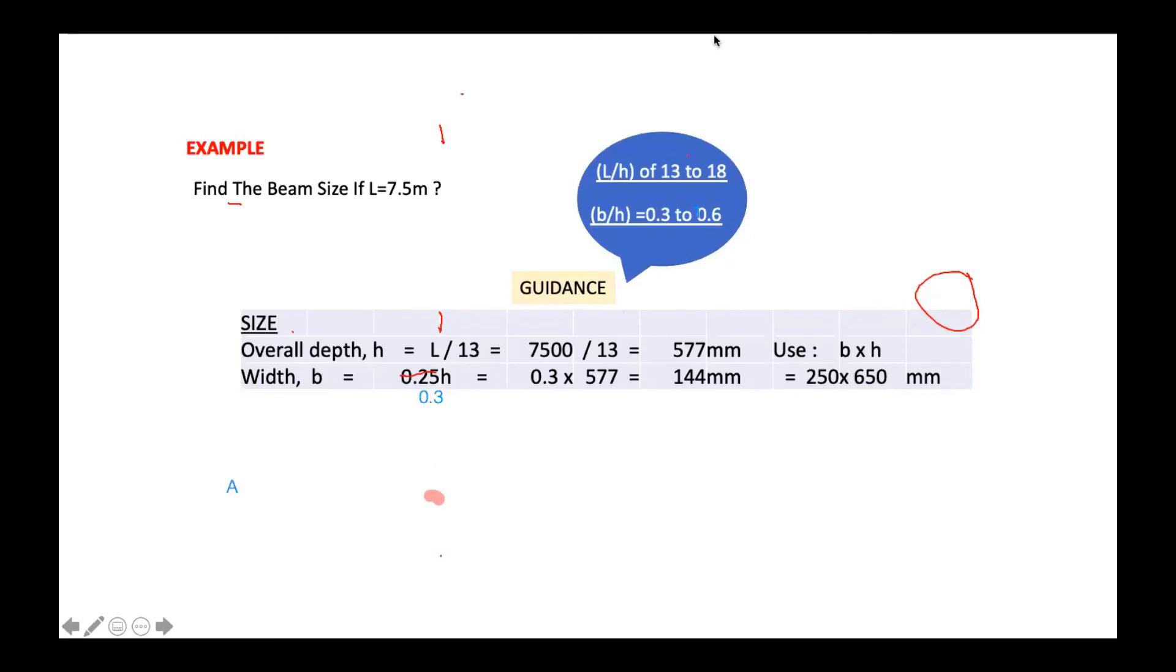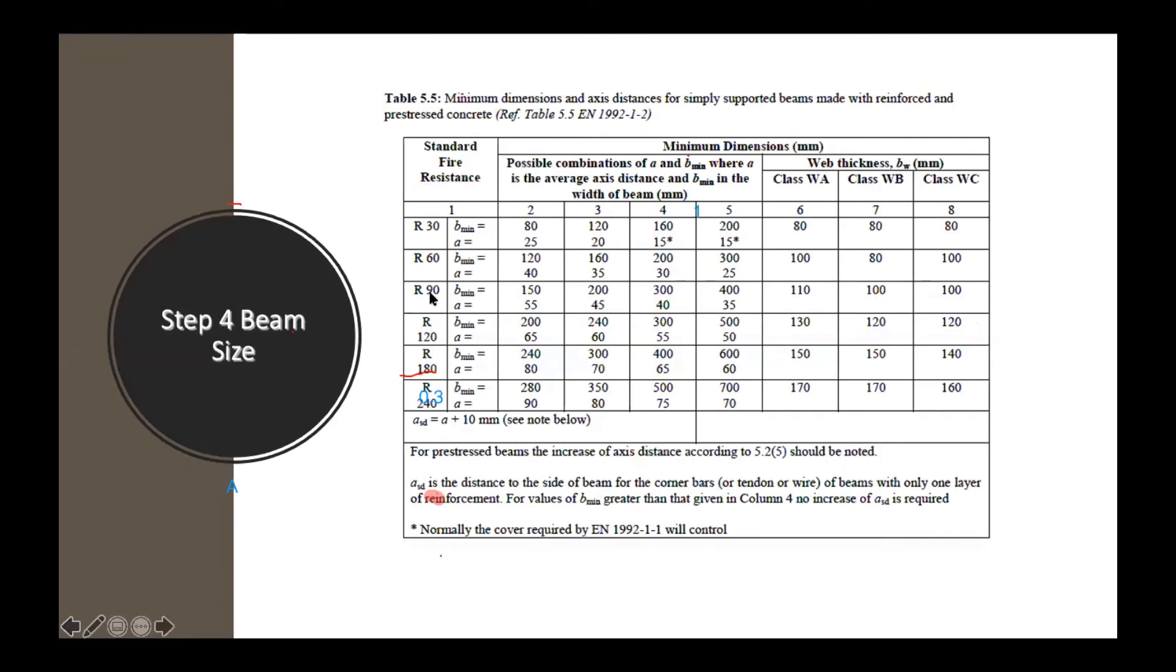That is one of the ways that how we find the size of the beam. Okay. Any question? Okay. From this example also, you can check with the previous table 5.5. Now, our B is 250. Okay. B is 250.